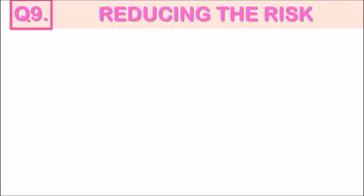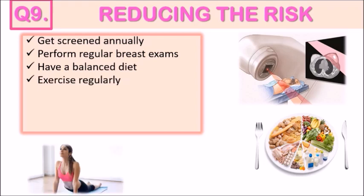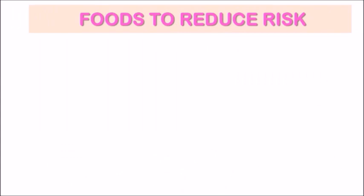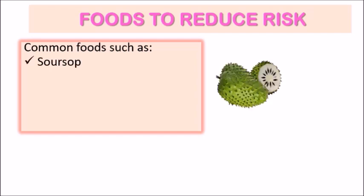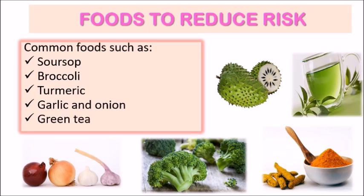Can breast cancer be prevented? There are numerous factors that can help reduce the risk of developing breast cancer, but none are guaranteed to give total immunity. These include getting screened annually, performing regular breast exams, having a balanced diet, exercising regularly, maintaining a healthy weight, stopping smoking, and reducing alcohol consumption. Some studies suggest certain foods can help reduce the risk of cancer, including soursop, broccoli, turmeric, garlic, onion, and green tea. Consuming rich amounts of these foods has been shown to reduce cancer growth or even kill cancer cells.